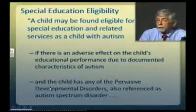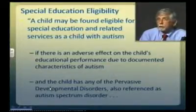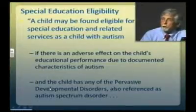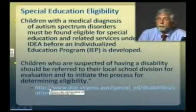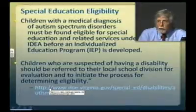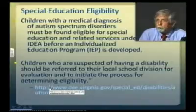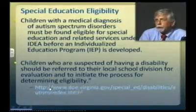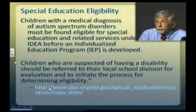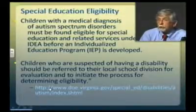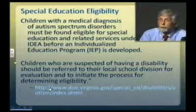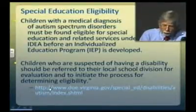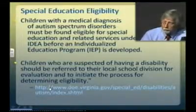The child may also be found eligible as a child with autism if the child has any of the pervasive developmental disorders — also referenced as autism spectrum disorders — including autistic disorder, Asperger's disorder, or PDD-NOS. Importantly, a child with a medical diagnosis of autism must still be found eligible for special education and related services under IDEA through the school system's own process. Children who are suspected of having a disability should be referred to their local school division for evaluation to initiate the eligibility process.